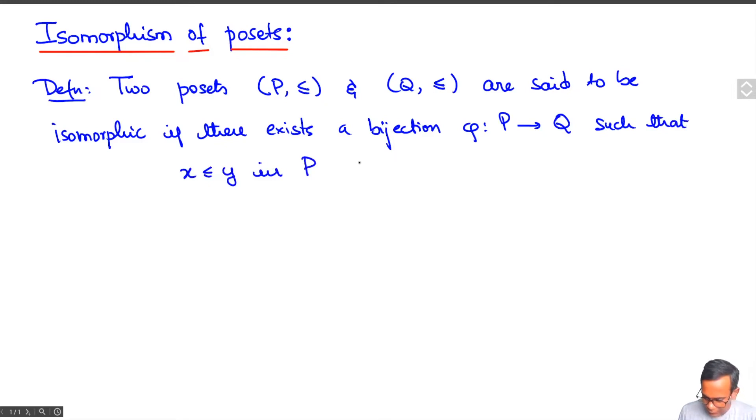This is a partial order in P, if and only if phi x is less than or equal to phi y in Q for all x, y in P.